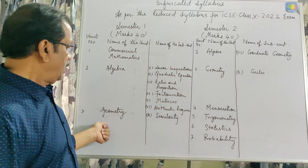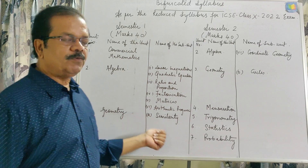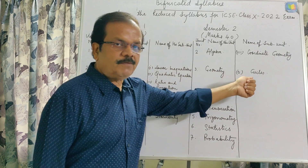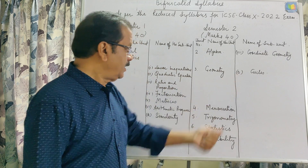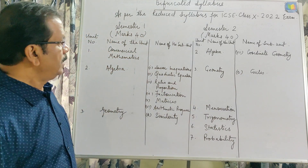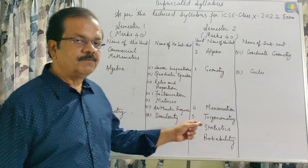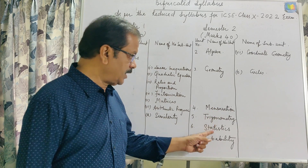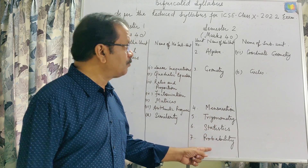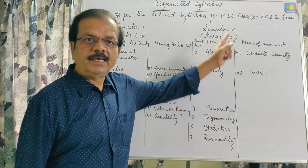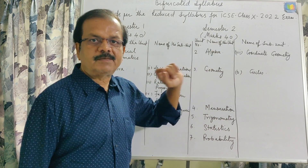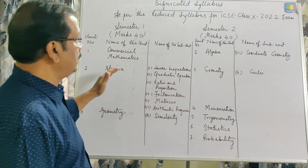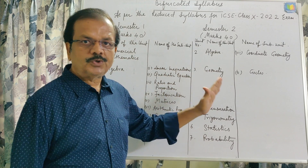Coordinate geometry from algebra you will find in the second semester. From geometry, similarity you will find in the first semester and circles in the second semester. The remaining chapters — mensuration, trigonometry, statistics, and probability — you will find in the second semester.